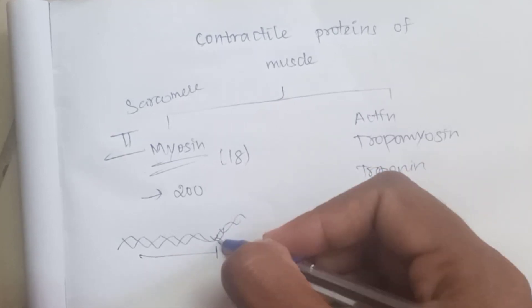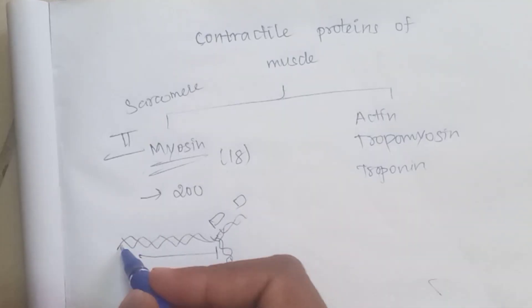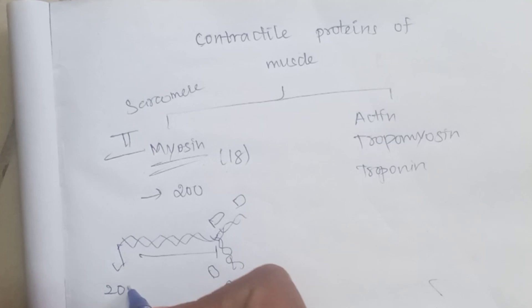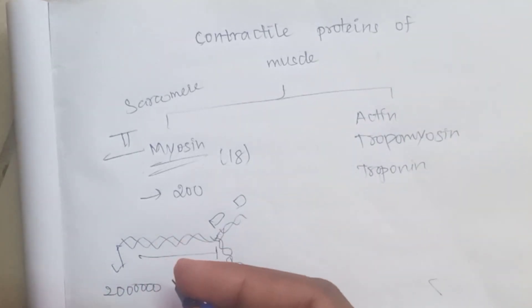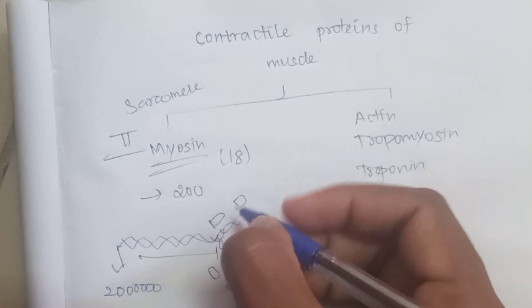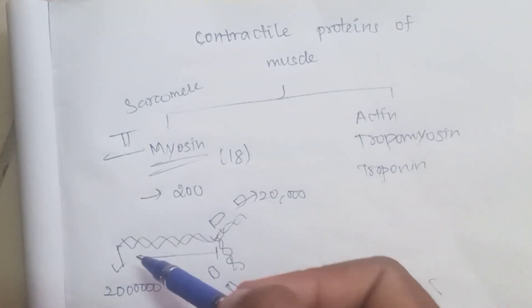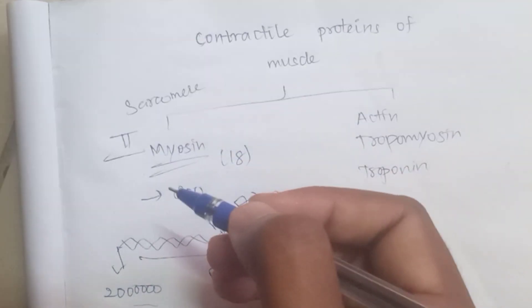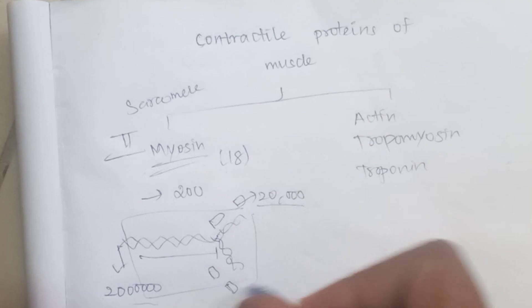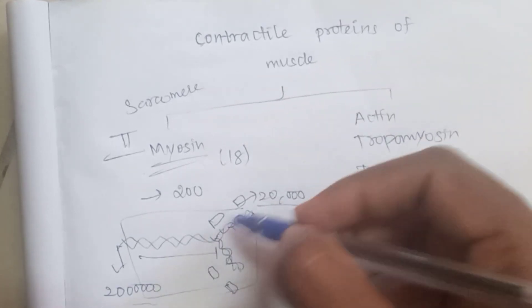Let's talk about myosin chains. There are 4 light chains. The heavy chain molecular weight is 2 lakhs (200,000). The light chain molecular weight is 20,000. The heavy chain is about 5,000,000 and the light chain is 25,000.